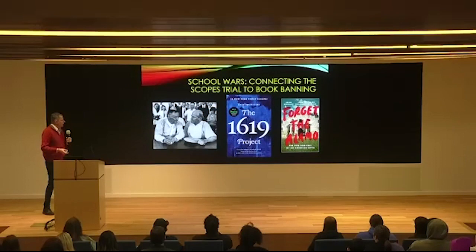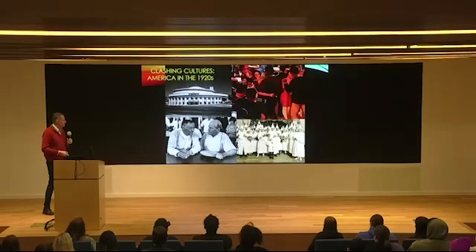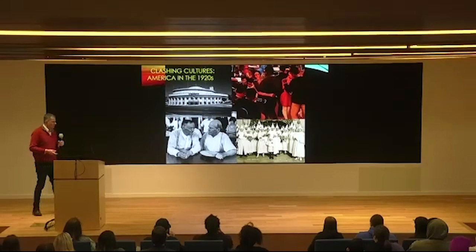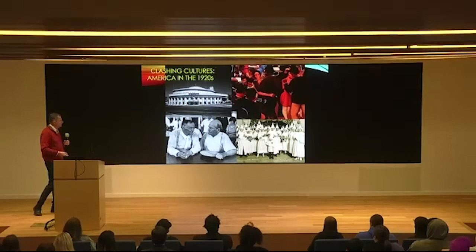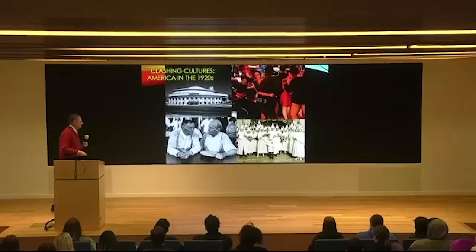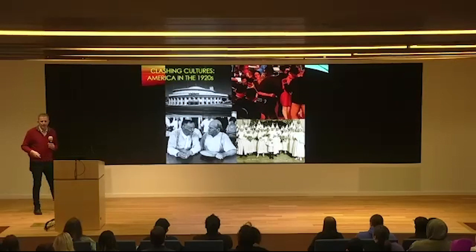I'm going to talk about the Scopes Trial of 1925 and then try to connect it to book banning, which is not entirely new in American history, but we've seen a resurgence of it the last few years. My class has been looking at other examples of social tension, including heightened racism in the 1920s.